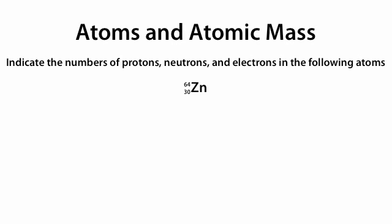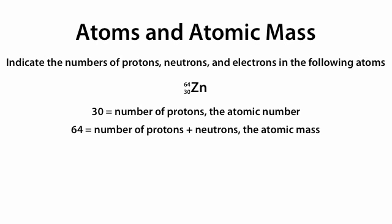We're given the symbol Zn with the number 64 on top and the number 30 on bottom. What do these numbers mean? The number 30, located on the bottom left, is the number of protons, or what we call the atomic number. 64 is equal to the number of protons plus neutrons, which we call the atomic mass.